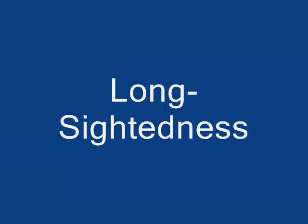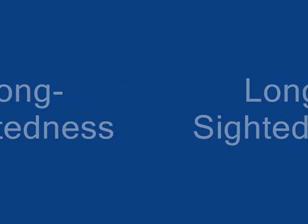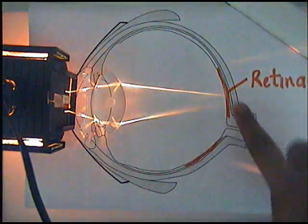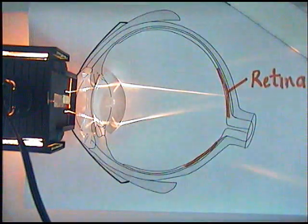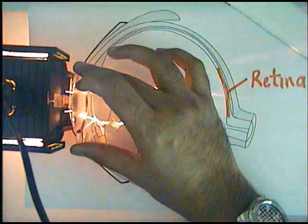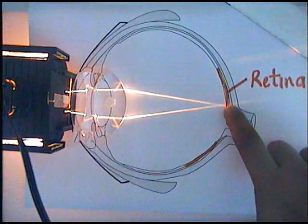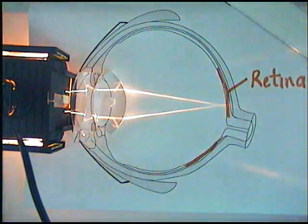People who suffer from long sightedness see distant objects clearly but nearby objects appear blurred. If we have a look, the light is focused after the retina so the optician will prescribe convex lenses which will ensure that the light focuses on the back of the eye correctly.